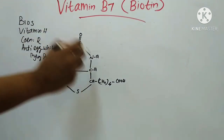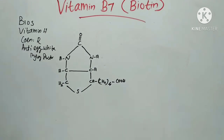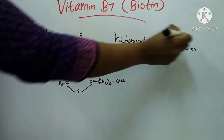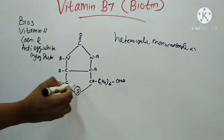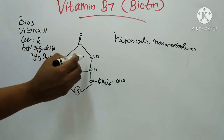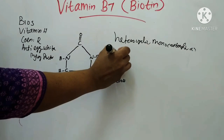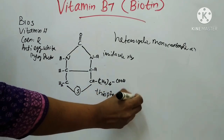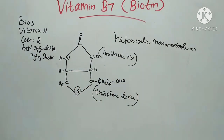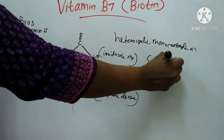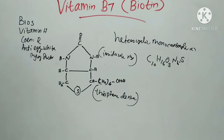This is the structure of Vitamin B7. Biotin is a heterocyclic monocarboxylic acid. It is a sulfur-containing water soluble B vitamin. This structure consists of two fused rings — an imidazole ring and a thiophene derivative. Biotin is chemically hexahydro-2-oxo-1-thieno-3,4-imidazole-4-valeric acid, represented as C10H16O3N2S.